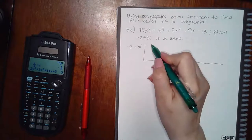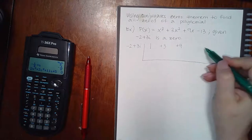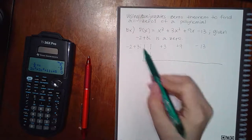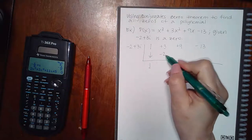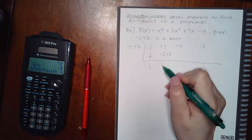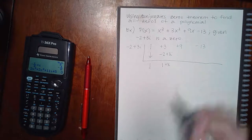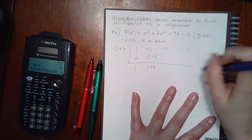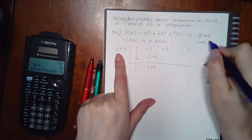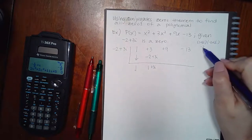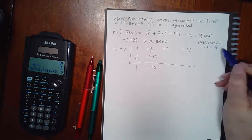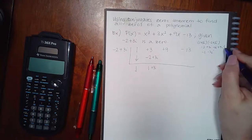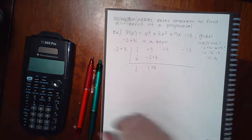It's already in descending order: 1 for x cubed, positive 3 for x squared, positive 9 for x, and negative 13 for the constant. Multiplying this times 1 gives negative 2 plus 3i. You combine the real parts, but there's no imaginary part to add with, so you still have the plus 3i. Then you multiply 1 plus 3i times negative 2 plus 3i over on the side — that gives negative 2 minus 3i minus 3i, then negative 9, so negative 11 minus 3i.